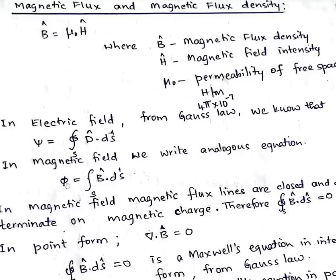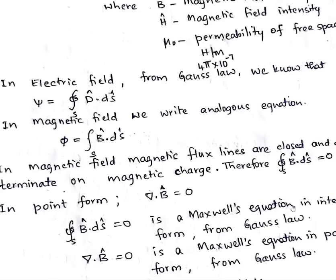There is no magnetic charge, so phi = 0, and therefore the surface integral of B dot dS = 0. In point form, this gives del dot B = 0. In contrast, for electric fields the relation is del dot D = rho_v, where rho_v is the volume charge density. The reason is that magnetic flux lines are closed and do not terminate on any magnetic charge, so the total magnetic charge is nullified.